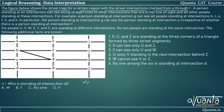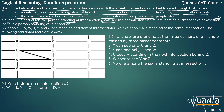This is the figure we are given — all these are the streets. Points A, E, I, B, F, J and all the others are the intersection points of the streets. A person standing at an intersection can see along straight lines to other intersections that are in her line of sight and all other people standing at these intersections. For example, a person standing at intersection G can see all people standing at intersections B, C, E, F, H, K. The person at G can see E irrespective of whether there is a person standing at intersection F. This is a very crucial statement — let me explain how people are able to see each other from a particular point.